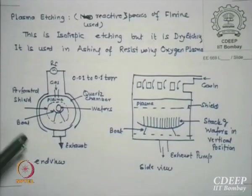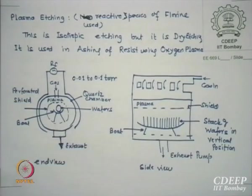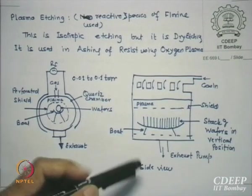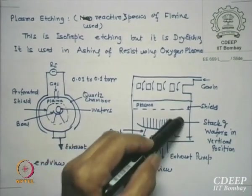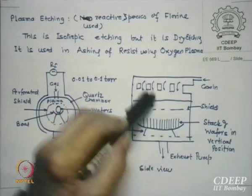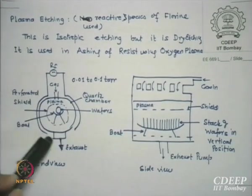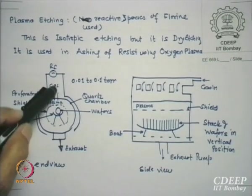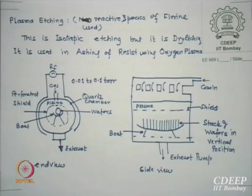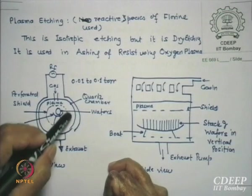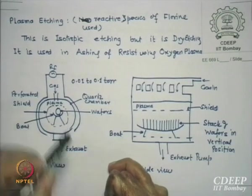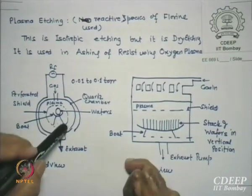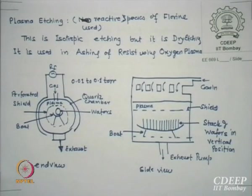Here is a reactor called the barrel reactor — actually that is how we started with this concept. This is the end view and this is the side view of the reactor. You can see from here there is a boat on which wafers are kept. Then between the two plates we apply RF — one plate, another plate, anode and cathode. The gas enters. The most important difference is there is a wire mesh kept there.